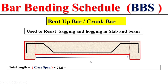Dear students, remember that if a bar is bent at a 45-degree angle, the incline portion is taken as 0.42 times the edge (h). So for the total length of the bend-up or crane bar, we take the total clear span, add the developmental lengths on both sides, and add the two incline lengths (2 × 0.42h).